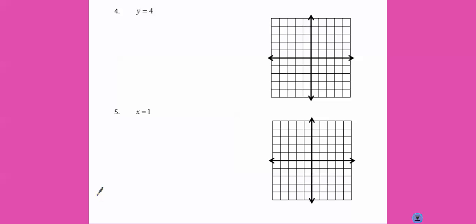Our last two examples are a little bit different. This is where we've got to remember LOI and VUX. Remember, LOI means horizontal when it's y equals and vertical when it's x equals.